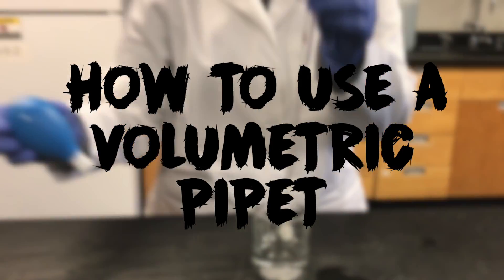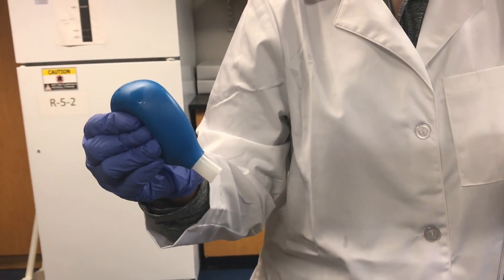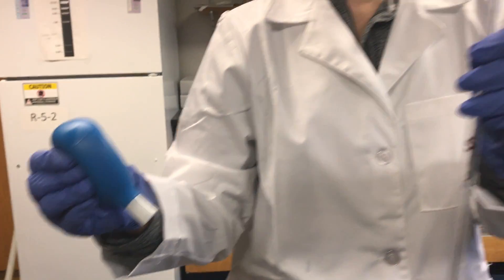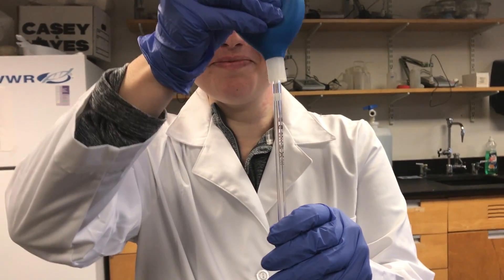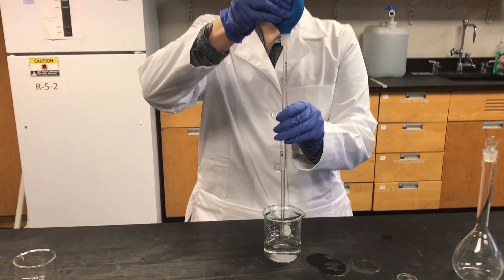Next we're going to teach you how to use a volumetric pipette. First you're going to squeeze the rubber bulb and then place it on top of the pipette. Next lower the pipette into the liquid and slowly release the bulb.